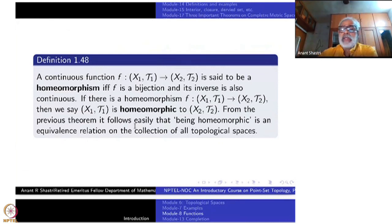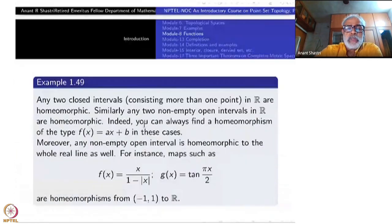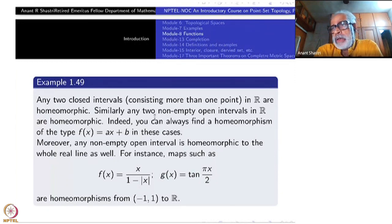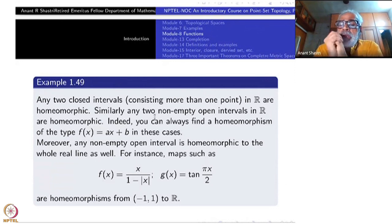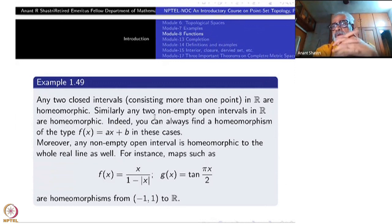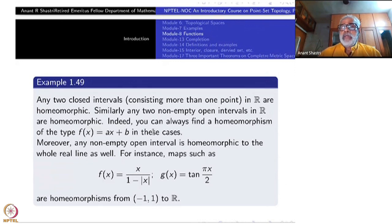This equivalence relation is of profound interest to us. As examples: any two closed intervals with more than one point are homeomorphic to each other. Singleton intervals should be avoided since a singleton can only be bijected with another singleton. Similarly, any two non-empty open intervals in ℝ are homeomorphic to each other. There are many homeomorphisms, and very nice ones of the form f(x) = ax + b (a linear polynomial of degree one) can often be used.